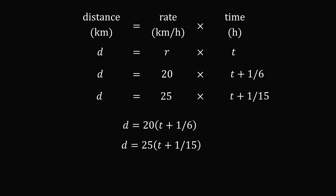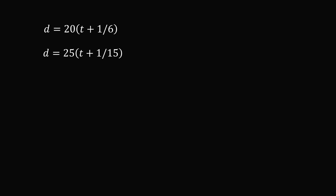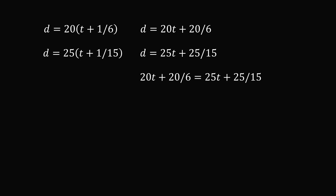We have two equations and two variables. Since both equations equal d, let's set them equal to each other: 20t + 20/6 = 25t + 25/15.